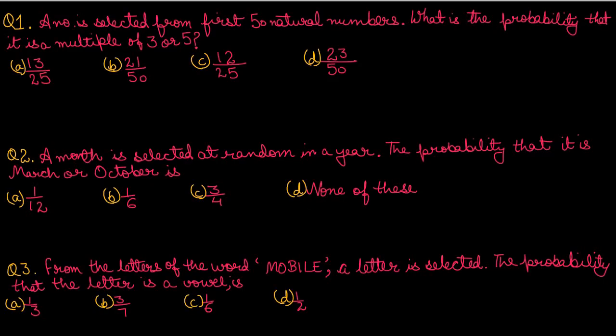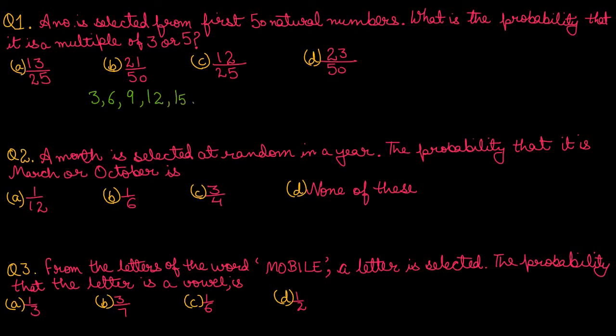Question number 1: A number is selected from the first 15 natural numbers. What is the probability that it is a multiple of 3 or 5? We have to select a number from the first 15 natural numbers which is a multiple of 3 or 5. First we write multiples of 3: that will be 3, 6, 9, 12, 15.